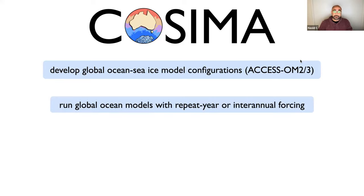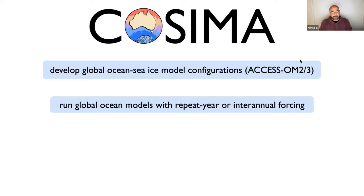We also run these ocean models with various forcings, either repeat year or inter-annual forcing from reanalysis. We apply for supercomputer time and we get a lot of that on the Australian supercomputer, and then we run a lot of models and we save a lot of data.